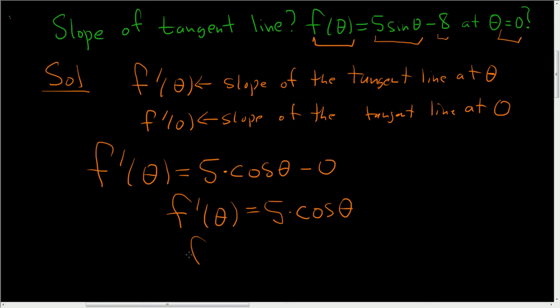To finish, all we do is plug in 0. So f prime of 0 is equal to 5 times the cosine of 0. And the cosine of 0 is 1, so you just get 5 times 1, which is 5. That's it.